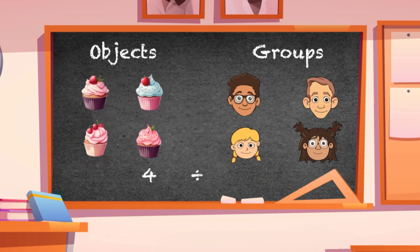Then, we add the division symbol. What do you think comes next? Yep, it's you and your three friends, which is four people total. Can you see how many cupcakes each person, or in math language, group, will get? That's right. Each person gets one cupcake.